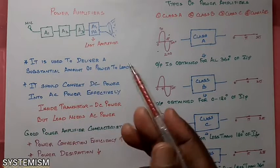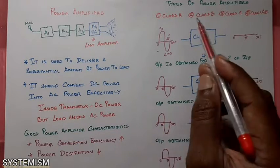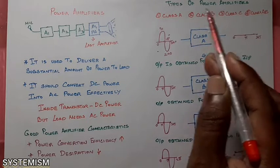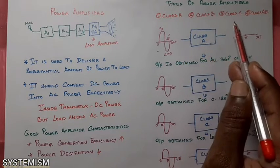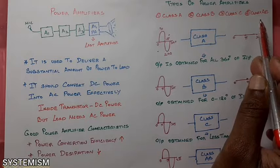Next, what are the different types of power amplifiers? Types of power amplifiers: class A, class B, class C, and class AB.